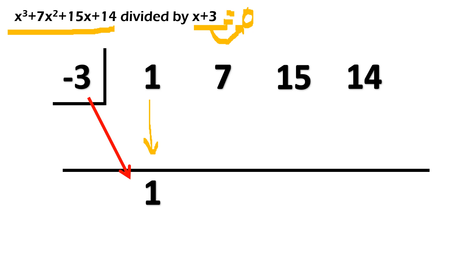Sunod, multiply. Negative 3 times 1 ay negative 3. Subtract naman, 7 minus 3 is 4. Multiply ulit. Negative 3 times 4 is negative 12. Subtract ulit. 15 minus 12 is positive 3. Multiply na naman tayo. Negative 3 times 3 is negative 9. And then, subtract ulit. 14 minus 9 will give us 5.